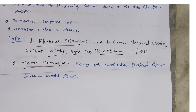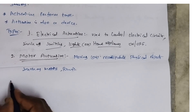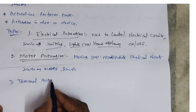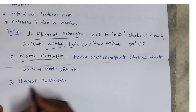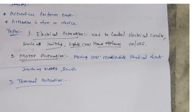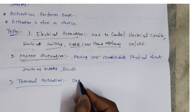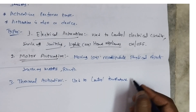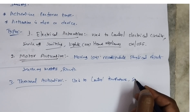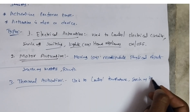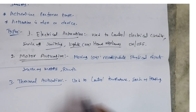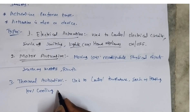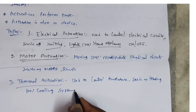The next one is thermal actuation. Thermal actuation is used to control temperature, such as heating or cooling of systems. Temperature control has two attributes: heating and cooling.